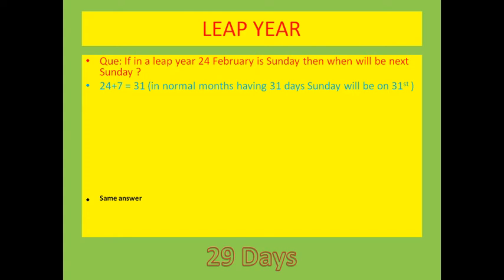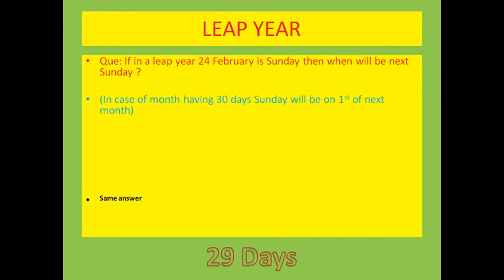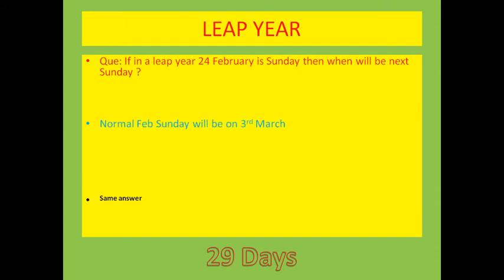This is applicable for months having 31 days, like January, March, May and so on. In the case of a month having 30 days, 24 plus 7 gives 31, but the month doesn't have a 31st day, so it will be the 1st of the next month. In a normal year, February has 28 days. So counting from 25, 26, 27, 28 — four days will fall in February — and the next Sunday will be on 3rd March.